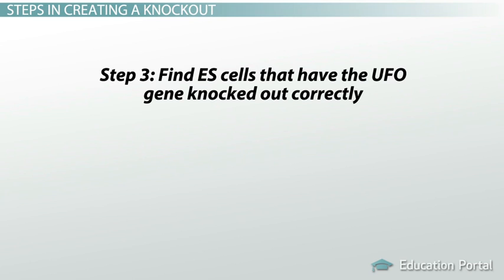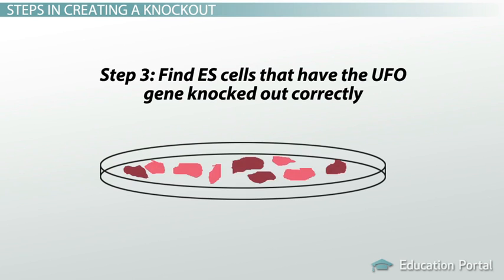Therefore, step three is to find ES cells that have the UFO gene knocked out correctly. We can do this by using the reporter gene and negative selection markers from the targeting vector we created in step one. This is a selection step.